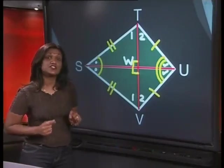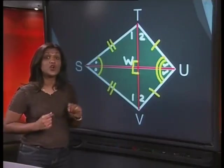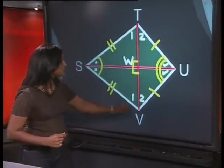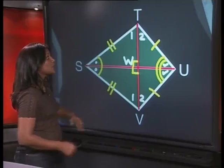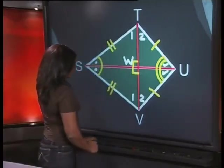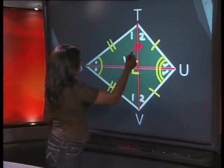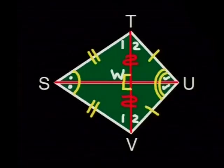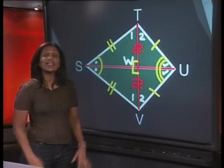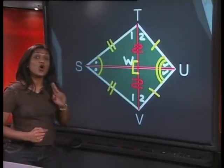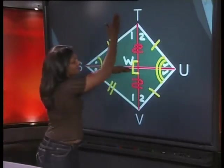So, here's another bit of information that we can use from knowing that triangle STW is congruent to triangle SVW. We know that TW is equal to VW. Let's mark that. This means that the diagonal TV is bisected. In any kite, the diagonal which bisects the vertex angles also bisects the other diagonal.